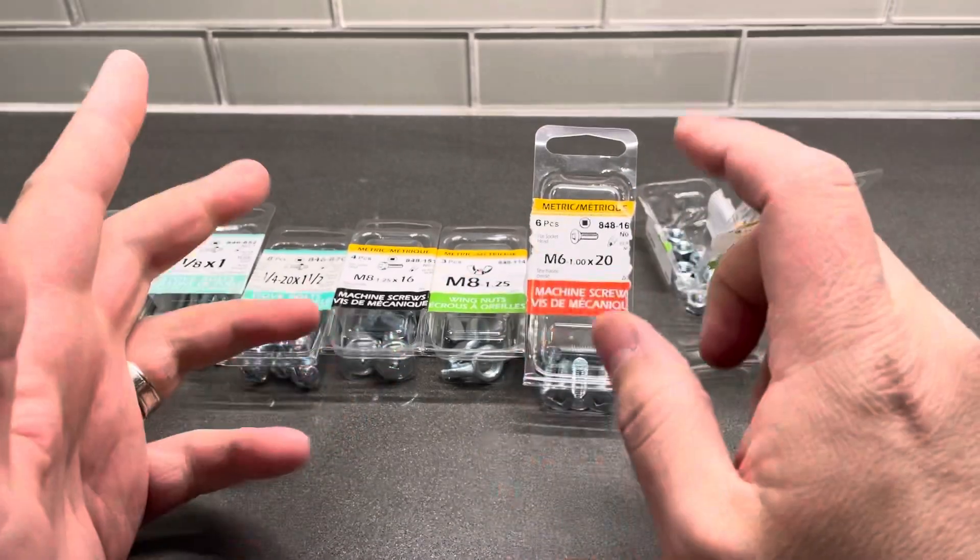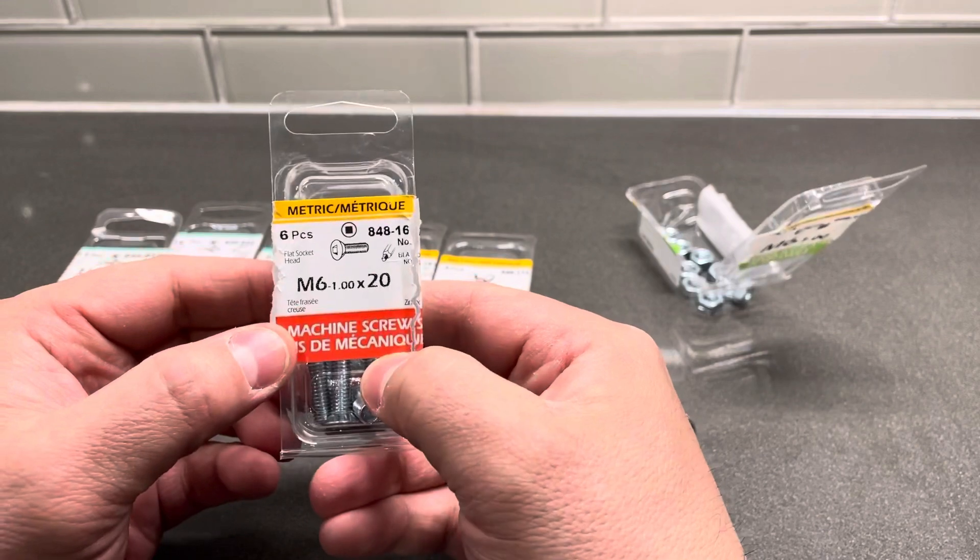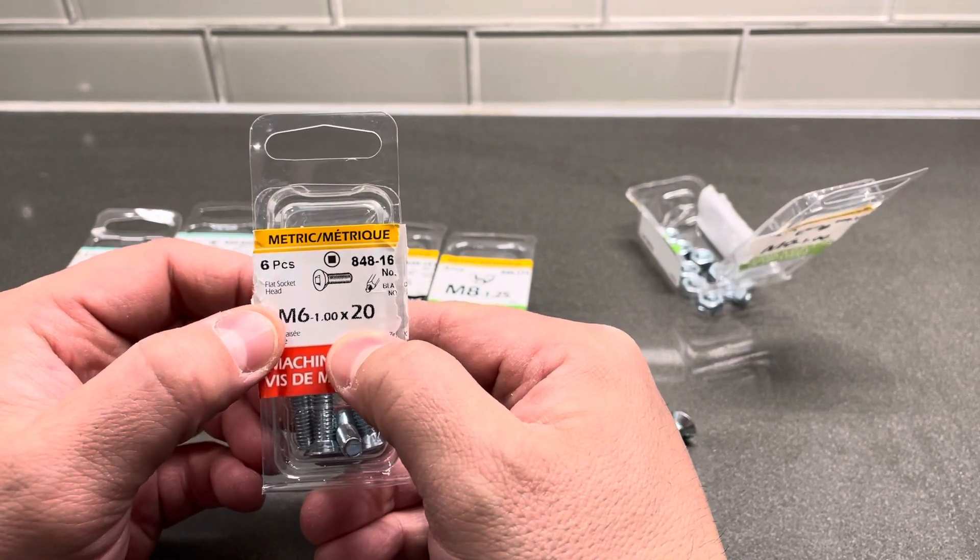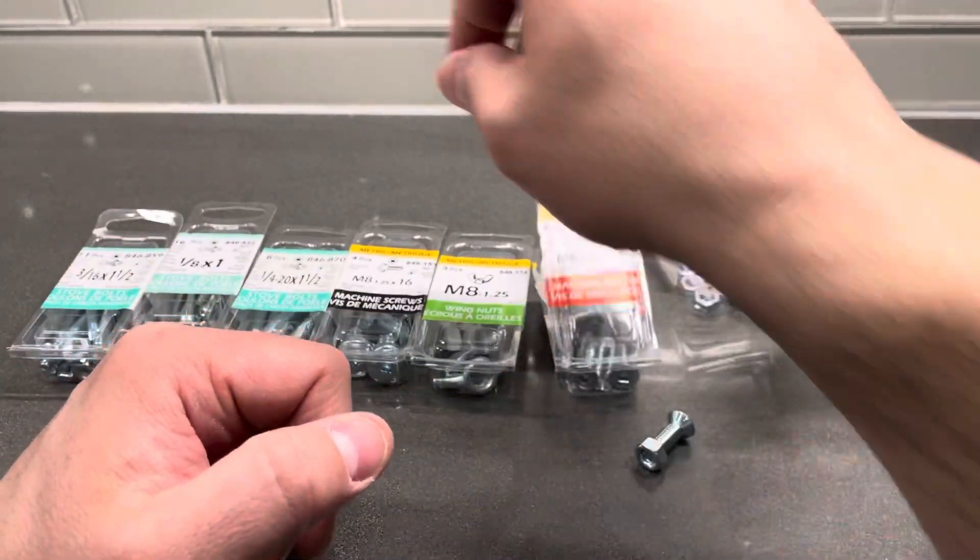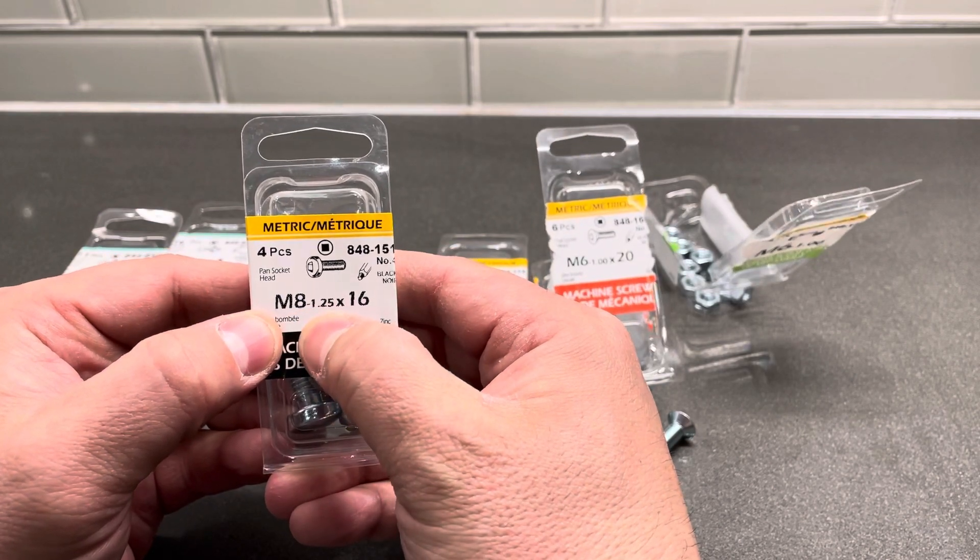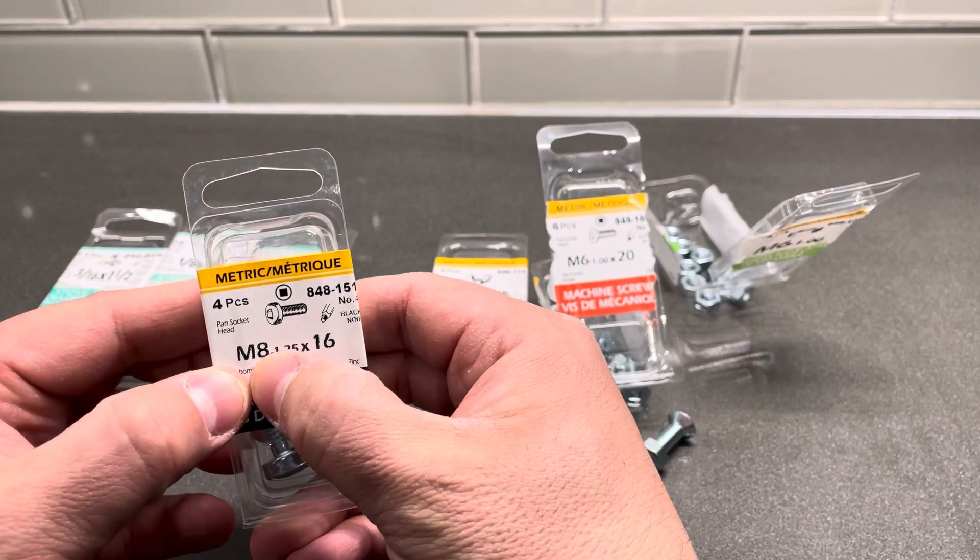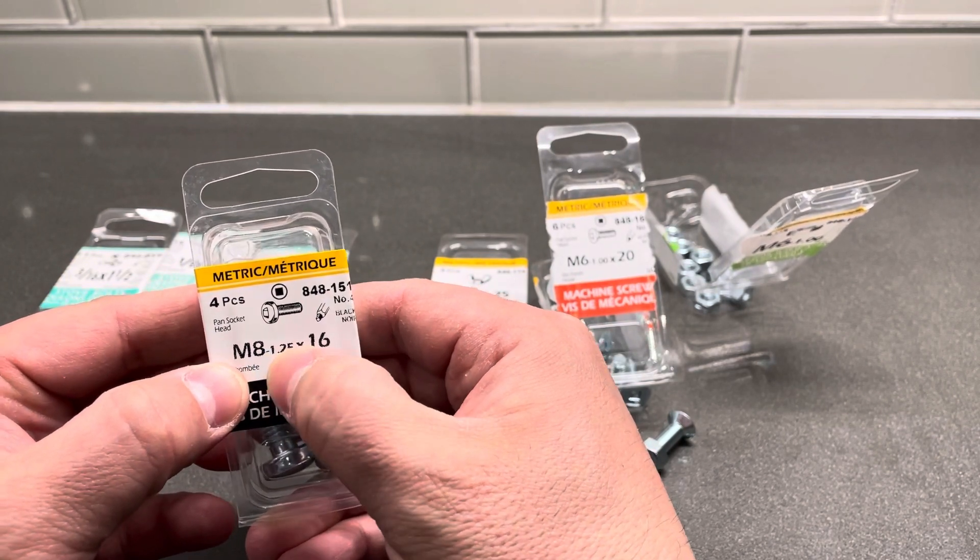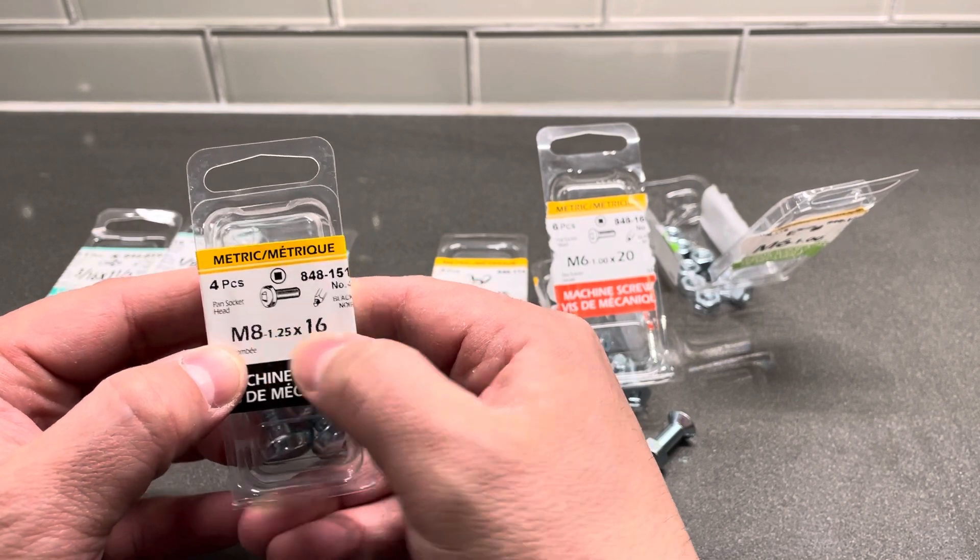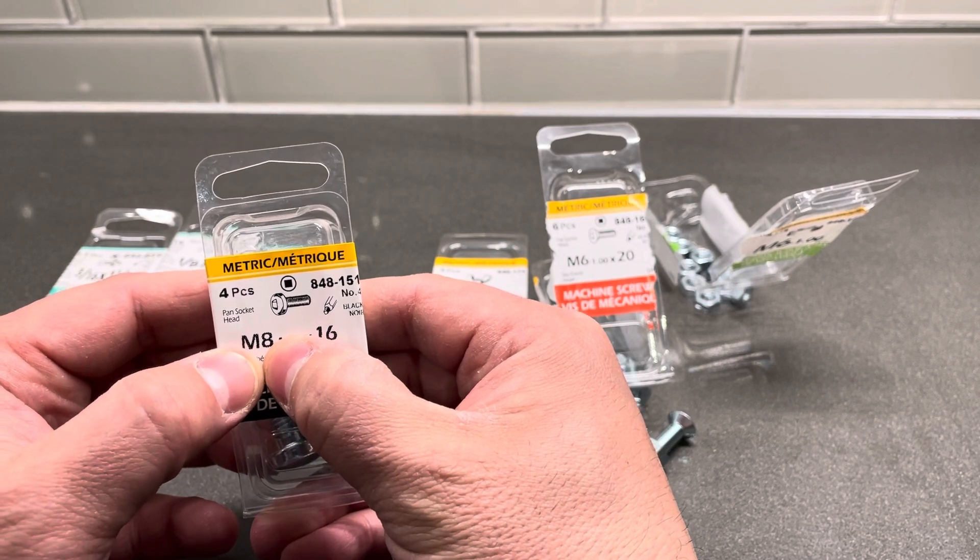Let's take one example. We have M8 1.25 times 16. Essentially, the M means it's a metric designation, so it's all measured in metric units. The eight is actually the diameter of the bolt in terms of millimeters, so it's eight millimeters in diameter, the actual bolt itself.